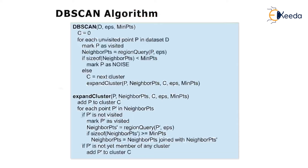The DBSCAN algorithm uses two parameters: eps, which is the density radius we calculate, and minimum points, which is the minimum number of points required to form a cluster.